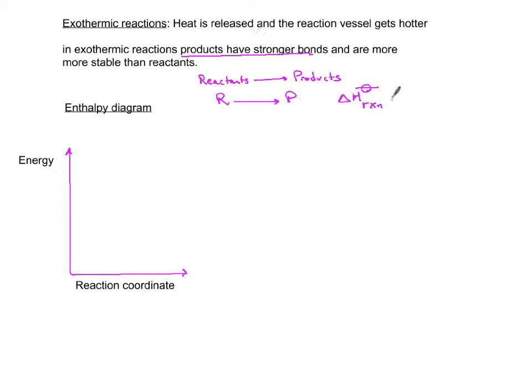Now if you're exothermic, by convention we decide you're less than zero. You have negative value, so delta H of reaction is negative. It has a negative sign.